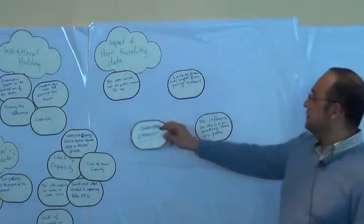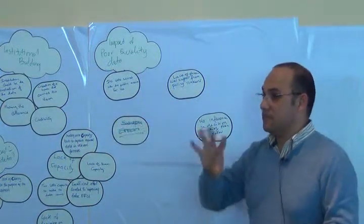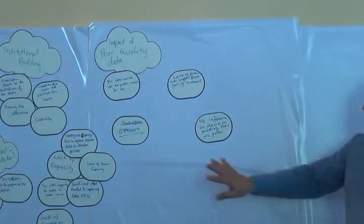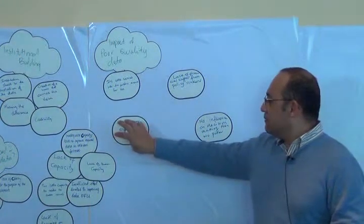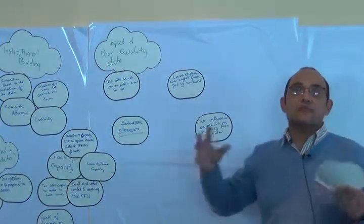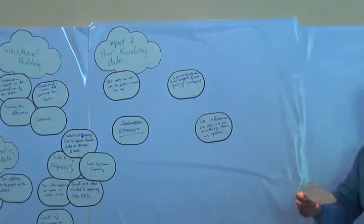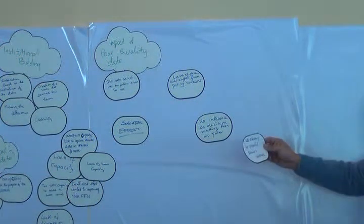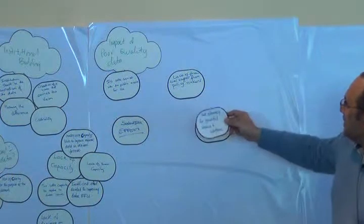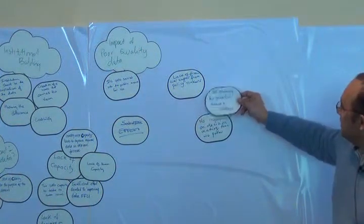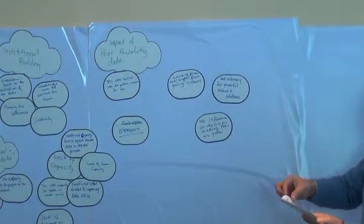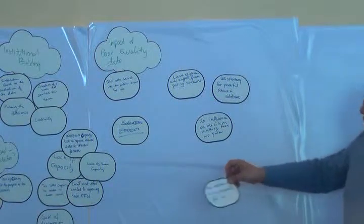The snowball effect — Kate explained it: if you don't fix it immediately, it becomes bigger and bigger until it feels like it can't be fixed. Less relevance for powerful science solutions and policy makers. More investment required to improve quality and use.